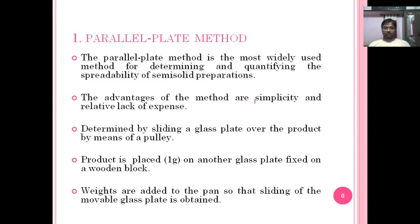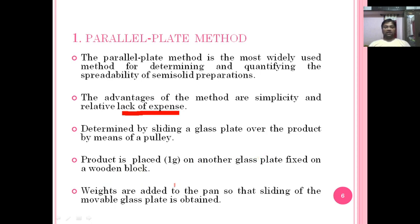The advantage of the parallel plate method is its simplicity and relative lack of expense. In this method, a glass plate is slid over a product by means of a pulley. One gram of product is placed on a glass plate fixed on a wooden block, and weights are added to a pan so that sliding of the movable glass plate is obtained.